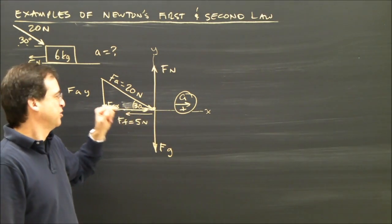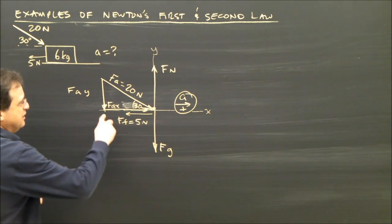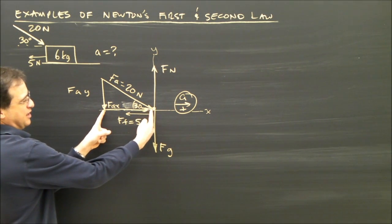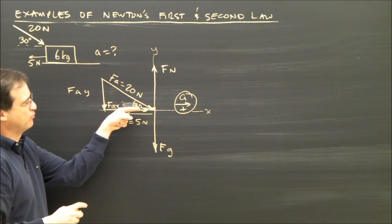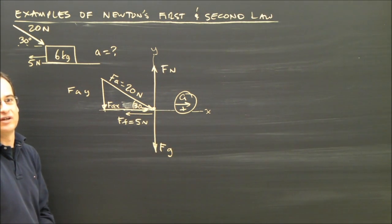It's accelerating to the right, so I need more force to the right than left. Fax is to the right and it's that long, and force of friction is to the left and it's this long. So I have more force to the right than left—that works out.